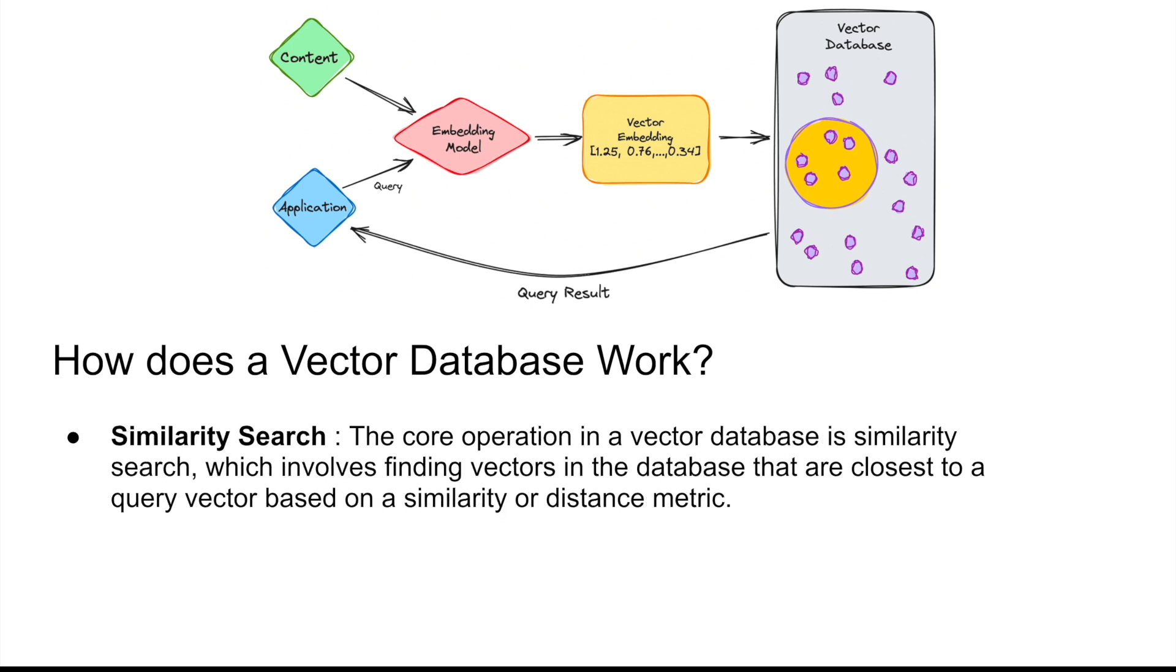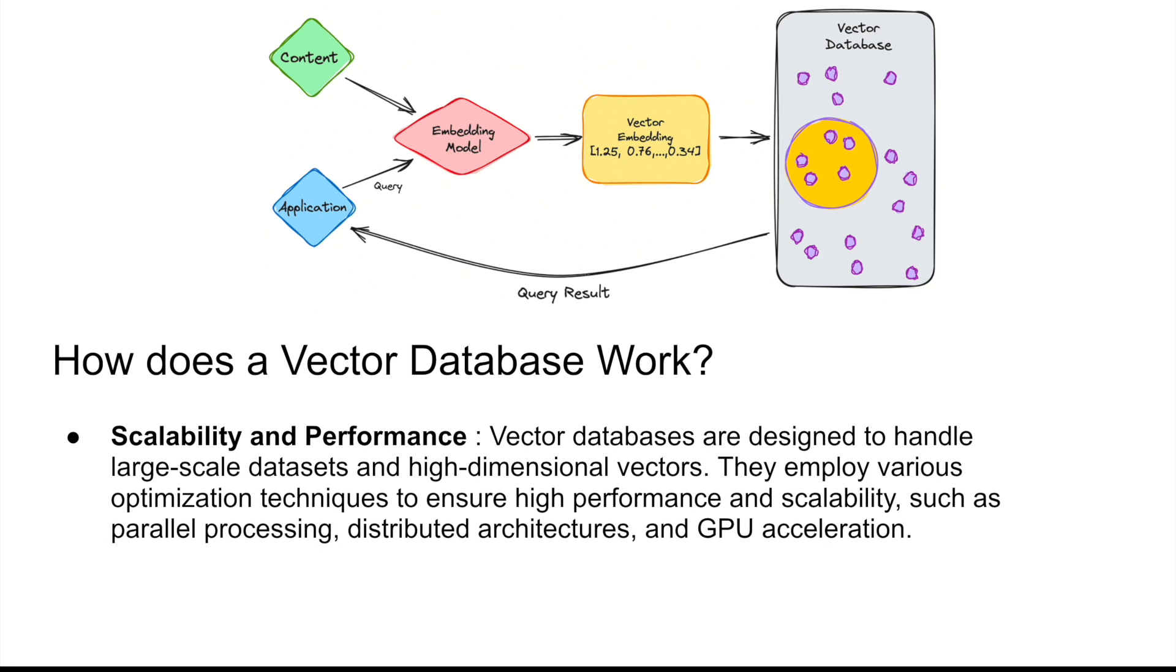How does a vector database give you the result? Well, in that case it uses something called a similarity search. There are multiple optimizations that have been carried out with respect to vector databases so that they can scale really well. Some vector databases also use GPUs in order to get the similarity search results quickly. So there are multiple techniques that vector databases use in order to give you the right performance and scalability.